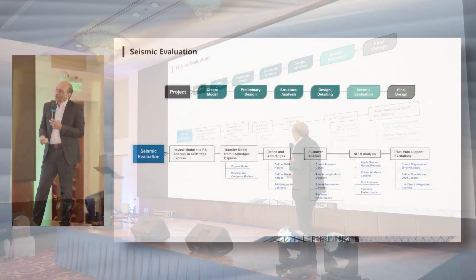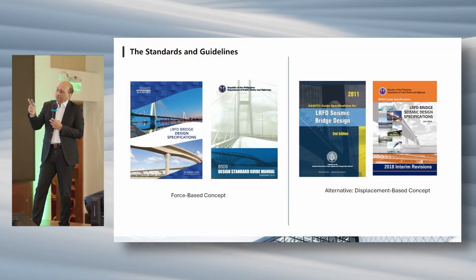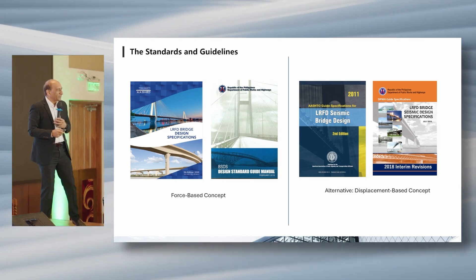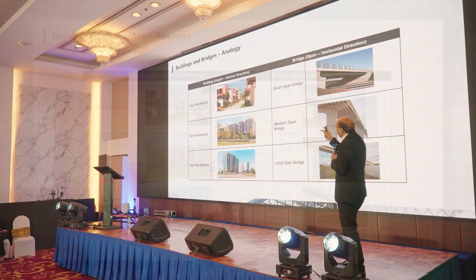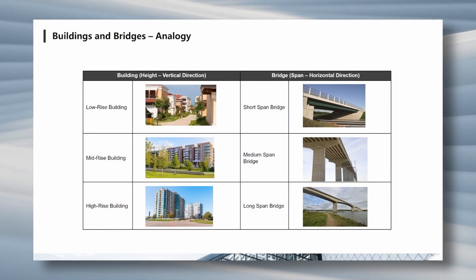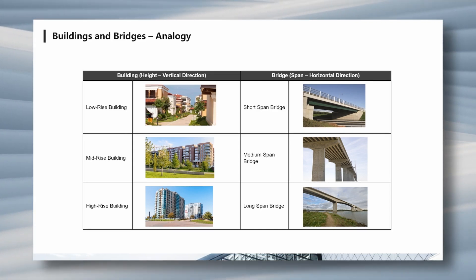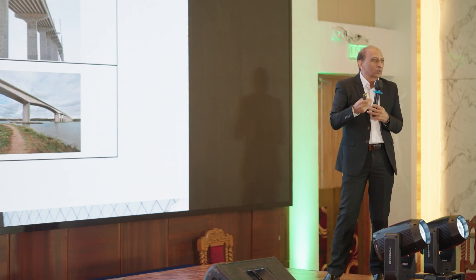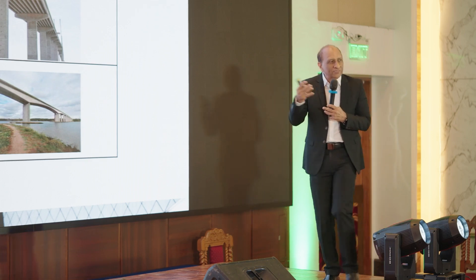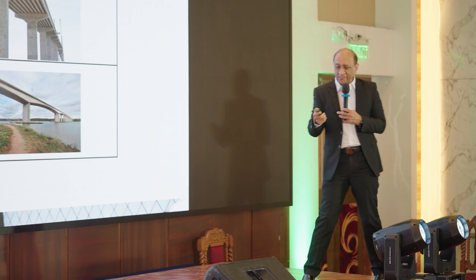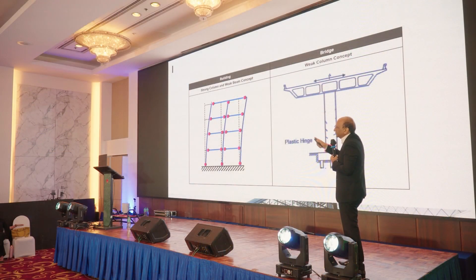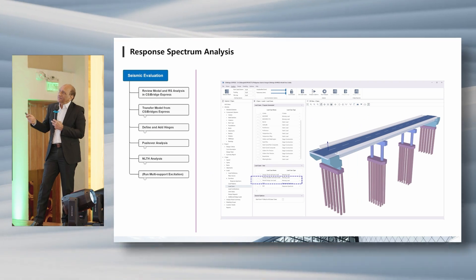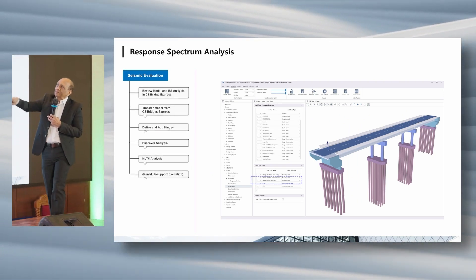We use two guidelines: force-based design and the alternate displacement-based control design. There's a comparison between low-rise buildings and short-span bridges, mid-rise and medium-span, and high-rise and long-span in terms of dynamics. Similar thumb rules exist for natural period in bridges as in buildings. In buildings we put hinges in the beams; in bridges we put hinges in the columns — we can't do it otherwise because the substructure is so large.